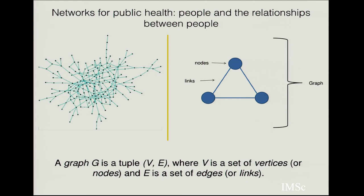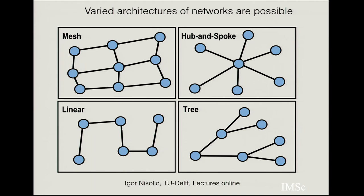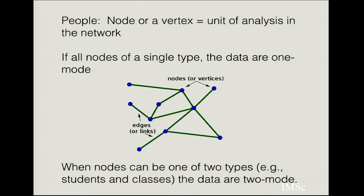When talking about networks for public health, a graph is a combination of a set of vertices V and edges E, where V is a set of vertices or nodes and E is a set of edges or links. A complicated set of nodes and links together gives a picture called a graph. There are many types of network architectures: a mesh like a fishing net, a hub-and-spoke architecture, a linear arrangement, and a tree-like arrangement that branches out successively at higher orders.